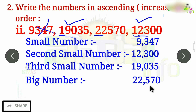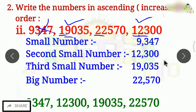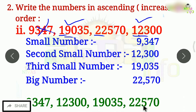Then we will pick up the order. Ascending order — we arrange from the small number. So the ascending order is: 9,347; 12,300; 19,035; 22,570.